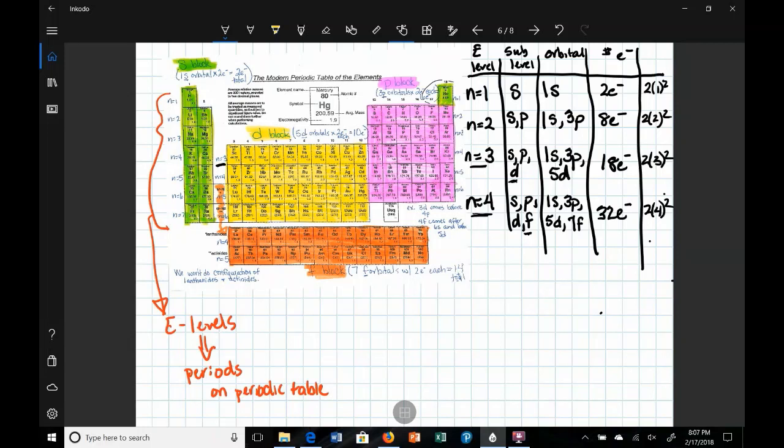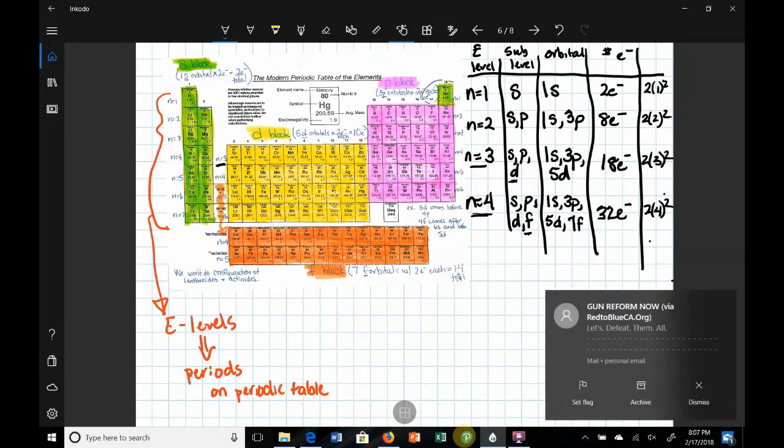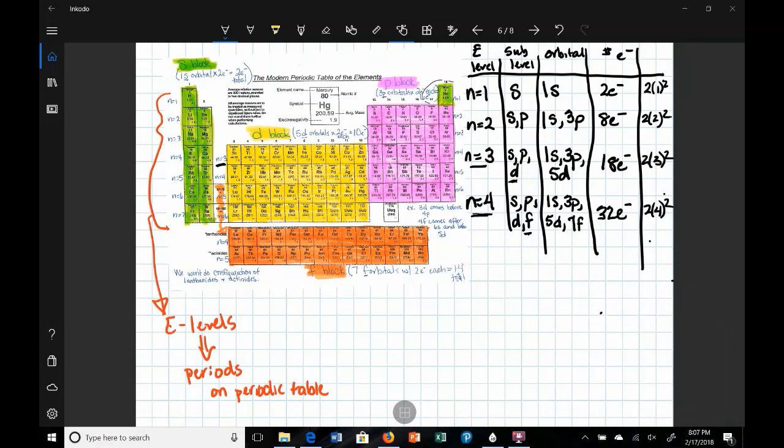We know that we can use our periodic table as it represents the energy levels in atoms. We can use it to help us write electron configurations straight from the periodic table.